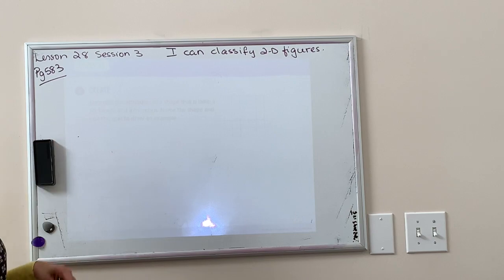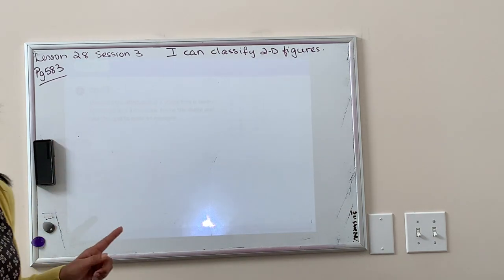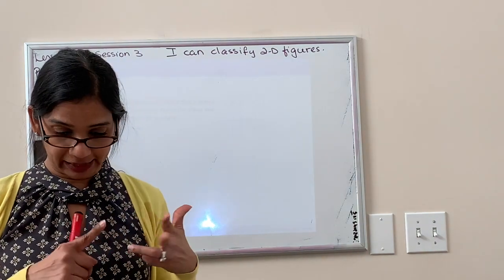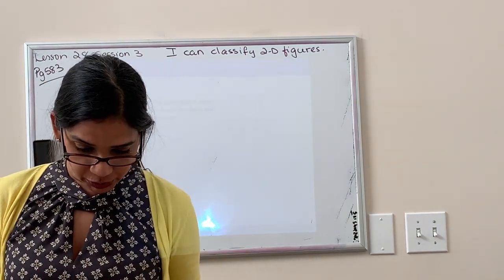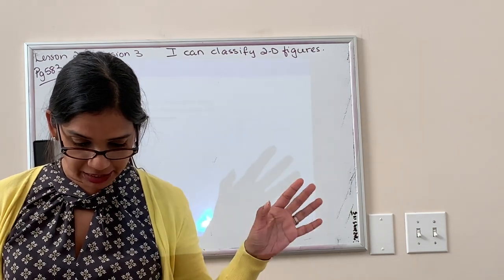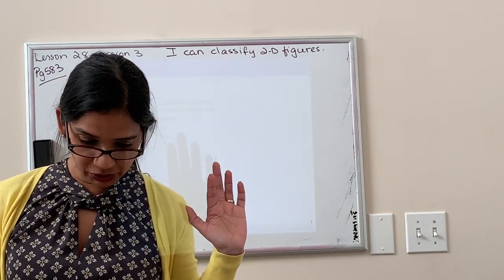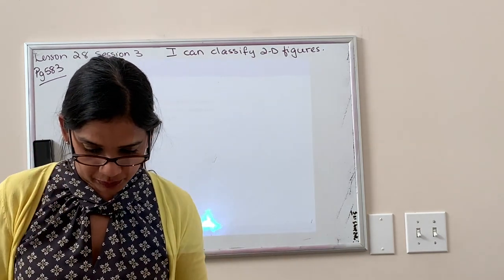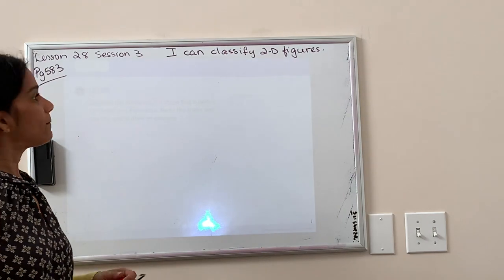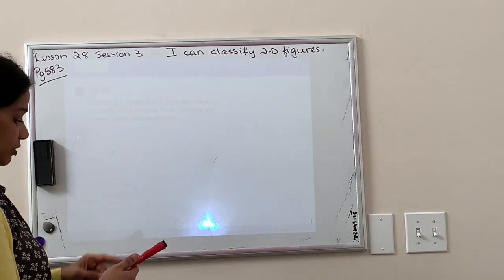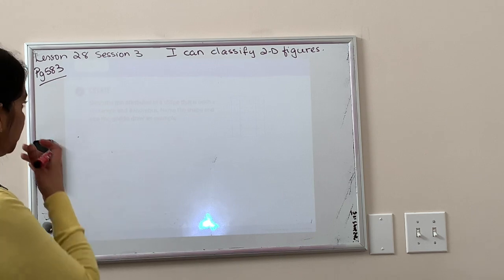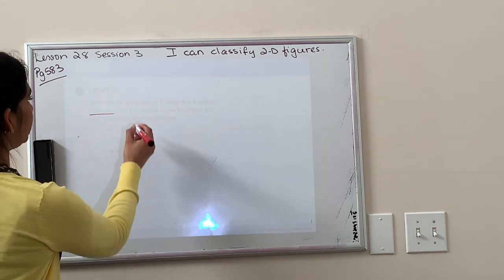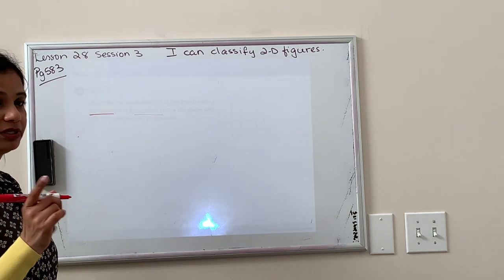All right, so we're at number three. This says, so let's just recap: One is explain, two is analyze, and three is create. So we're going to describe the attributes of a shape that is both a rectangle and a rhombus. Name the shape and use the grid to draw an example. So what could be a rectangle and a rhombus? We know that a rectangle has four sides and a rhombus has four sides.